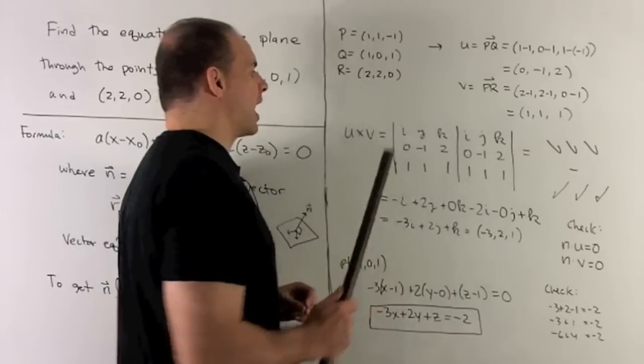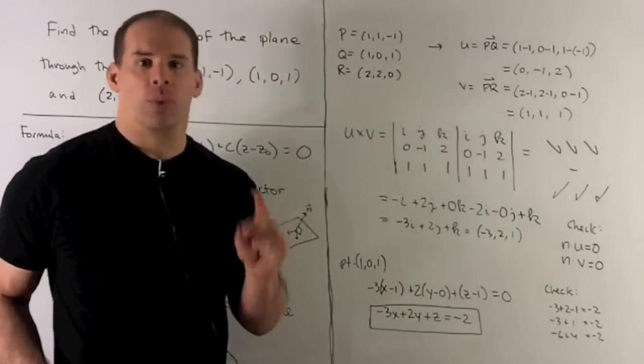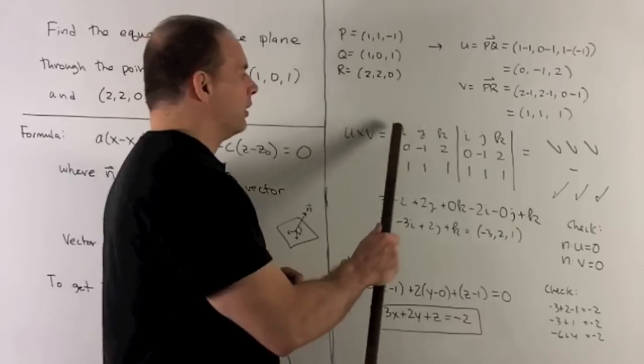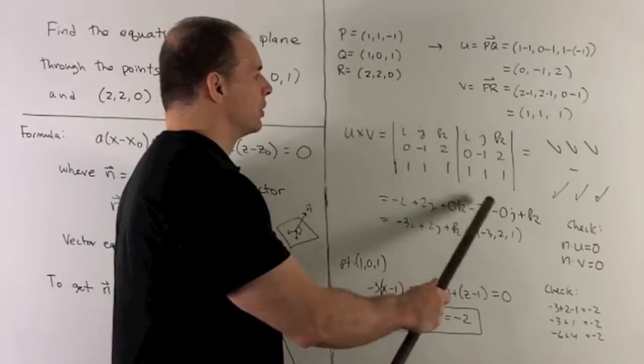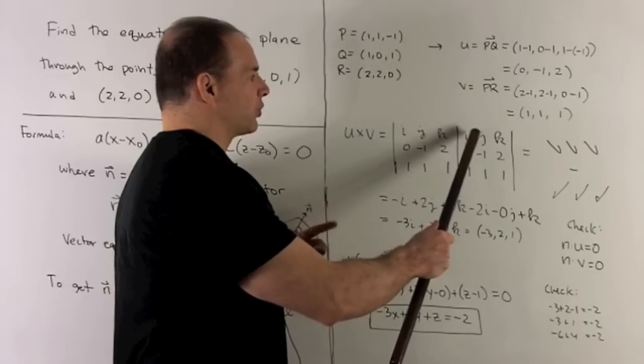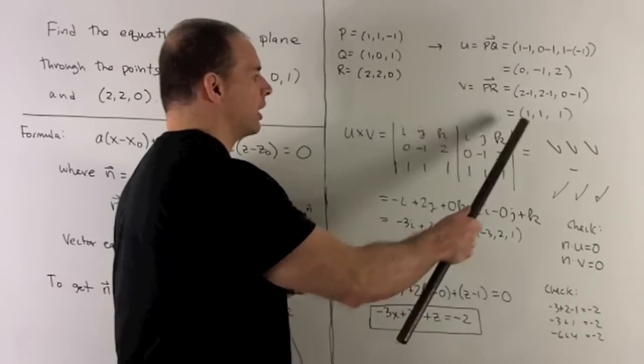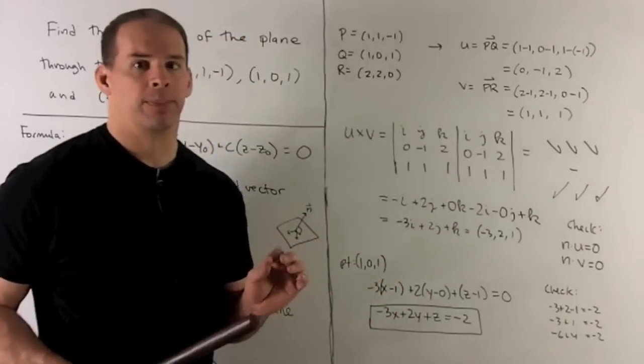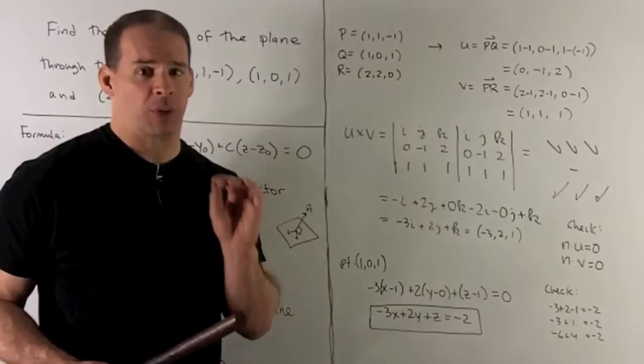We have I, J, and K on the top row. And note, what's our formula? I go down the first three diagonals, multiplying, add them together. I go down the next three diagonals backwards, and we subtract those. That's going to give us the cross product.